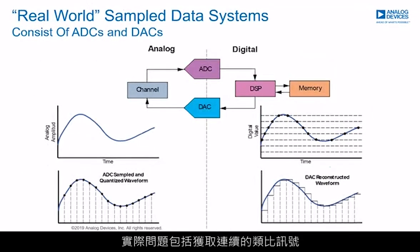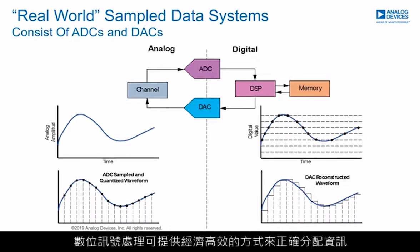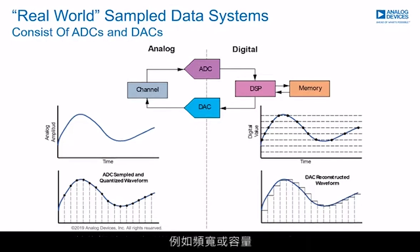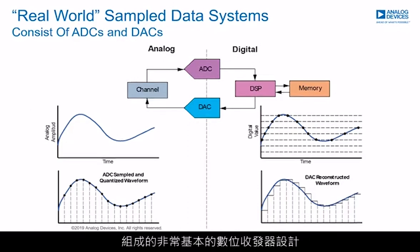The real-world problem consists of taking a continuous analog signal and applying decisions by means of digital signal processing to the signal. Digital signal processing allows for efficient and cost-effective means of allocating information correctly, such as bandwidth or capacity. Consider a very basic digital transceiver design, consisting of a receive path and a transmit path.